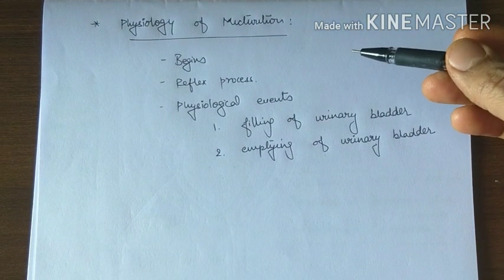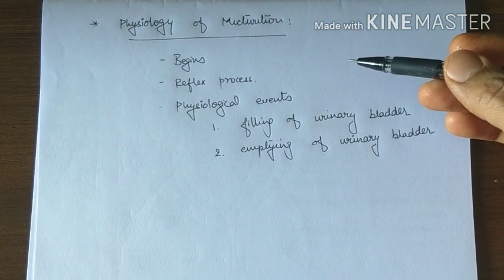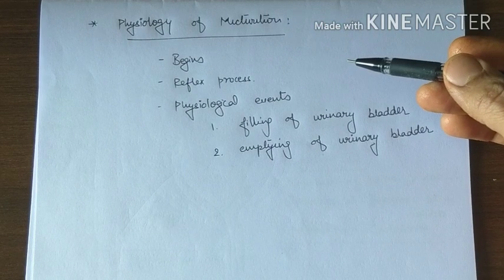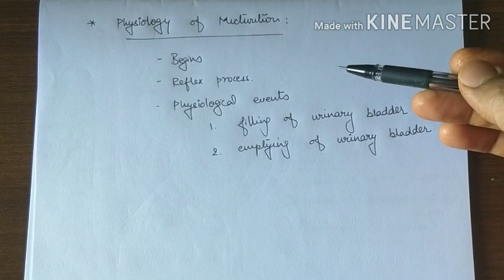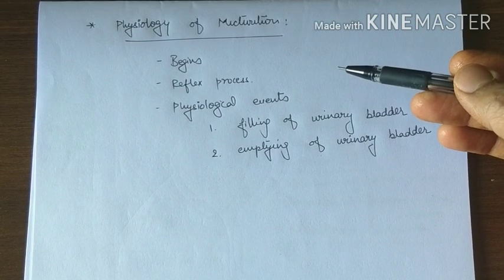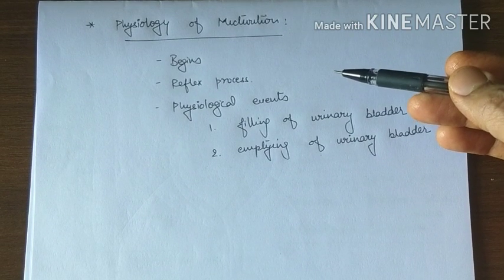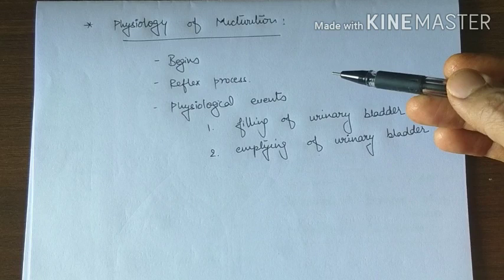Today we will discuss the Physiology of Micturition. Micturition is the process by which the urinary bladder empties. It begins at about the 5th month of intrauterine life and remains reflexive until 2 to 2.5 years of life.